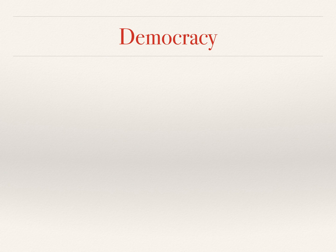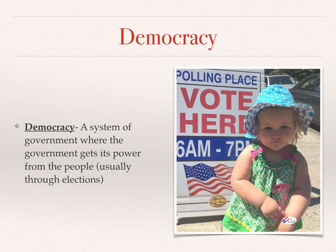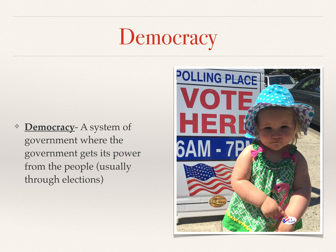Democracy may be a little more familiar to you. It's a system of government where the government gets its power from the people, usually through elections. There's a picture of my daughter exercising her democratic right — very happy about the fact that she has voted. Democracy means power comes from the people, as opposed to other systems where the people don't have much power.